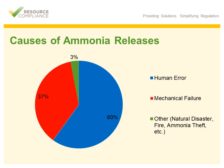In addition to considering the location of ammonia leaks, the survey also investigated the cause of ammonia leaks. According to those who responded, 60% of all ammonia leaks are caused by human error, while 37% are caused by mechanical failure. The remaining 3% resulted from other causes such as natural disaster, fire, and ammonia theft.